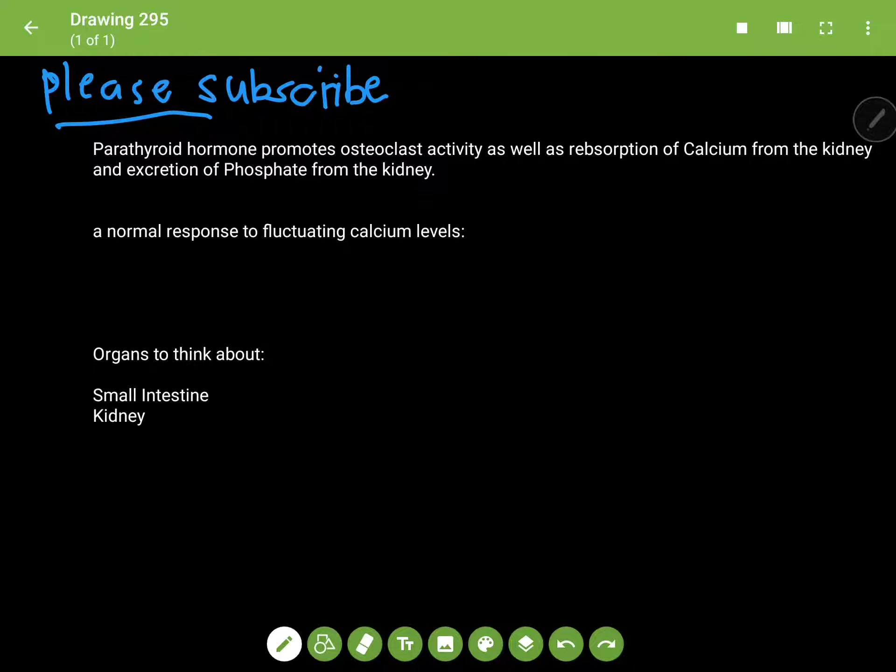I'm going to start out my lecture on parathyroid hormones by just reiterating that it promotes osteoclast activity in the bone primarily. It also acts on the osteocytic matrix of the bone, but what you really need to know is it promotes the release of calcium and, to a lesser extent, phosphate into the blood.